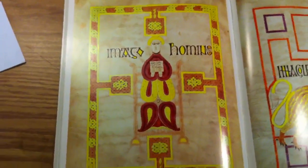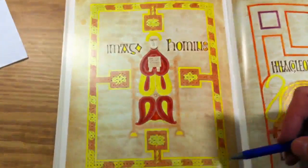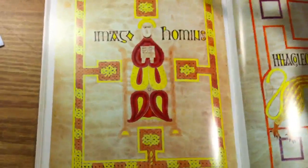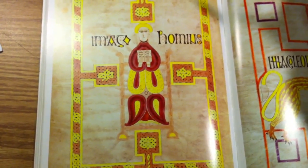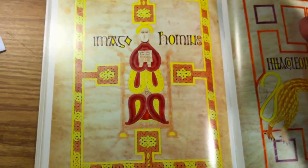As you can see on this page, there's a nice border with a lot of different Triskel designs going all the way around it, and the text reads Imago Hominus, which means the image of man, and that is the symbol of St. Matthew.